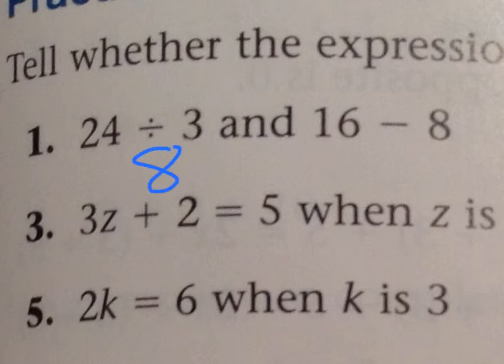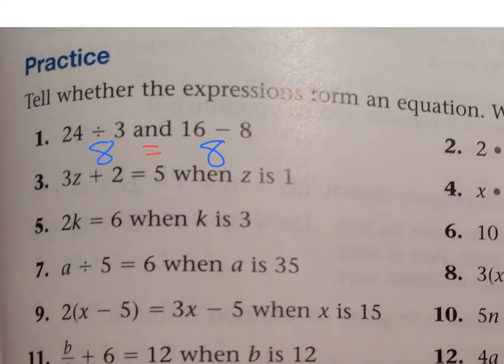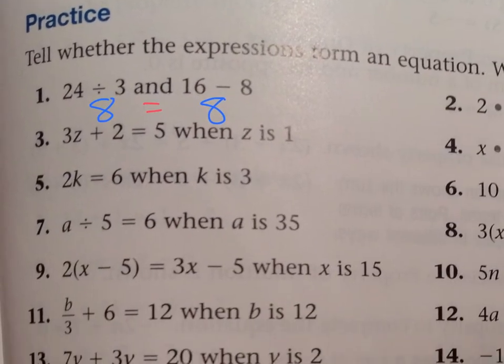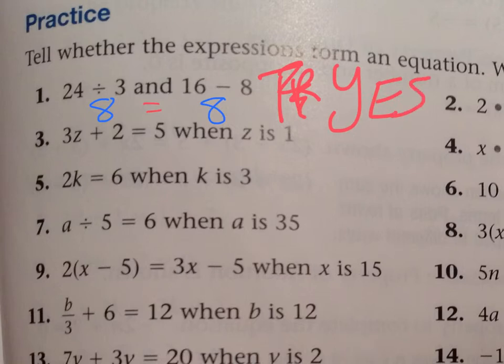So number 1 says 24 divided by 3. And I know that 24, if I do it in the calculator, divided by 3 is 8. And 16 minus 8, that's also 8. So these certainly are equal. And for number 1, what I'm going to write next to it in my notebook is true. Or, I'm sorry, you know what? I lied. I'm going to write yes or true. But yes, those are equivalent. Let's do one more.